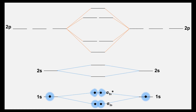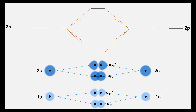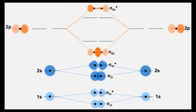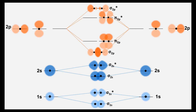For 2s, the same will occur. Now when we get to 2p, it's going to be a little different. If you line up the p orbitals end to end, you're going to get a sigma bonding and sigma anti-bonding orbital. But when you get to the degenerate pi orbitals, which are of the same energy, you can line them up side by side and have pi bonding and pi anti-bonding.